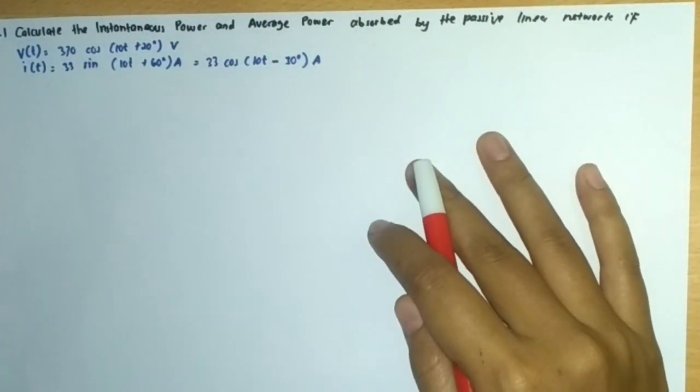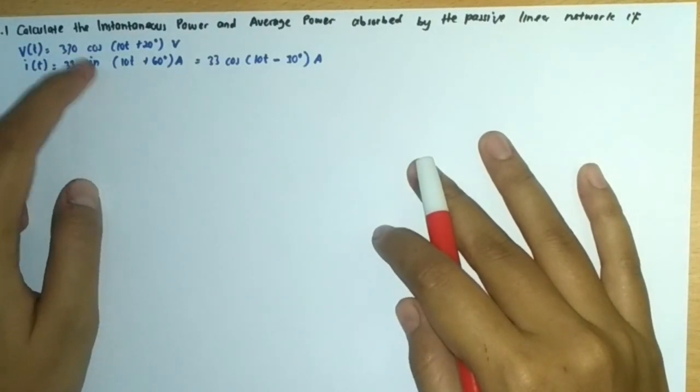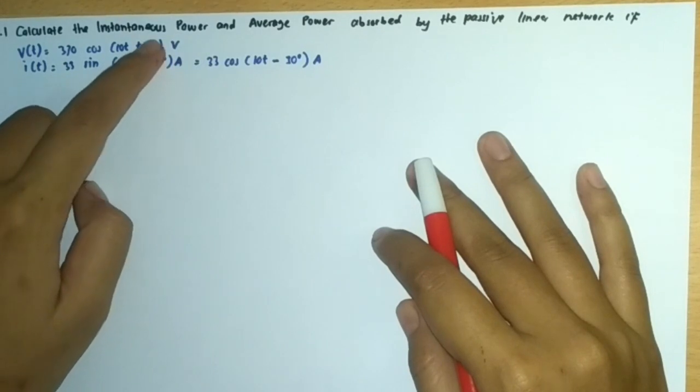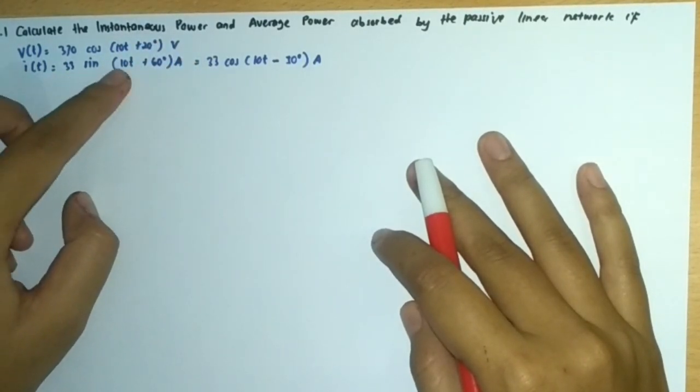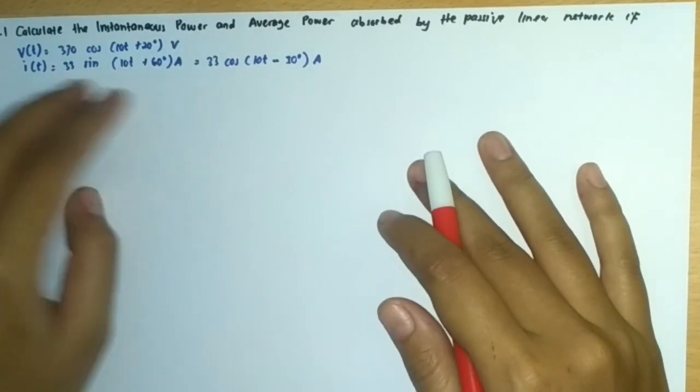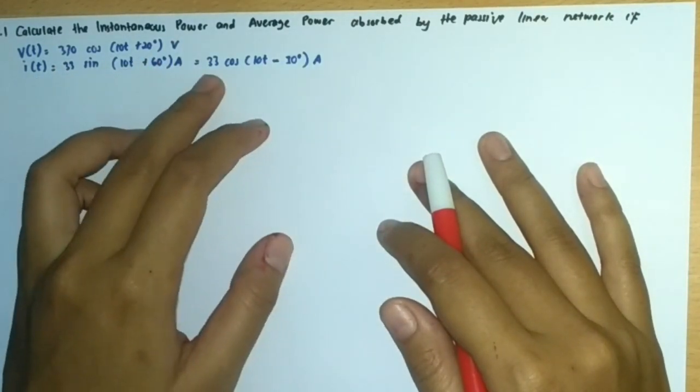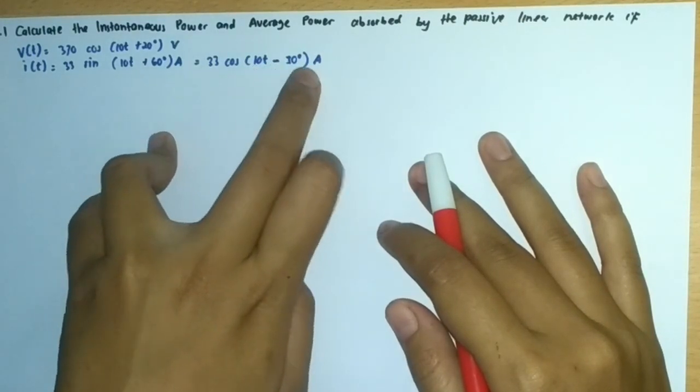Given that V(t) is 330 cos(10t + 20°) volts and i(t) is 33 sin(10t + 60°) amperes, which has the same value as 33 cos(10t - 30°) amperes.